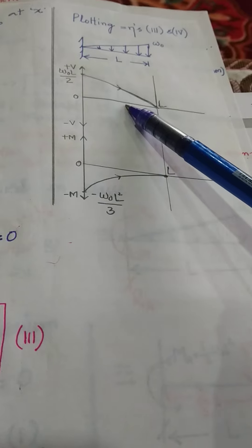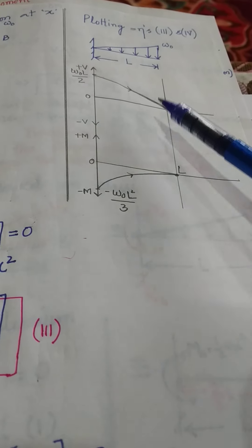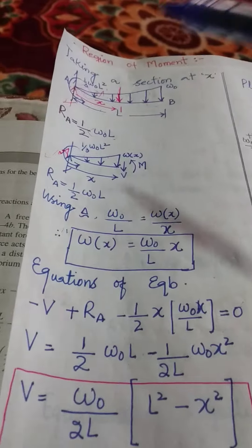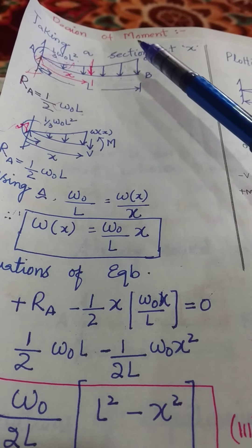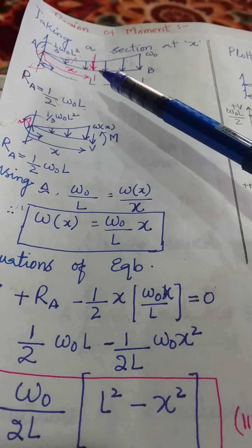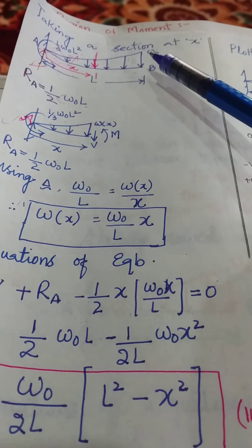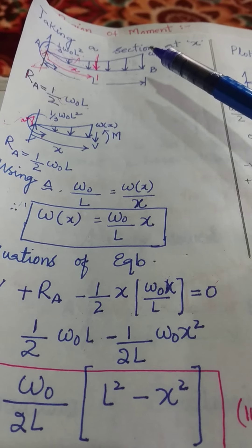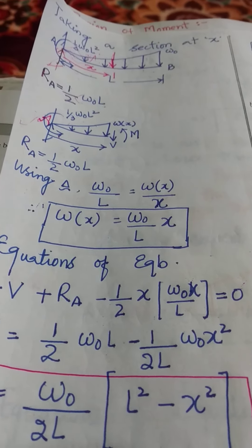So this is the shear force diagram, and this is the bending moment diagram. These are the shear force and bending moment diagrams for a beam having a triangular distribution of load, with maximum intensity W naught and span equal to L.